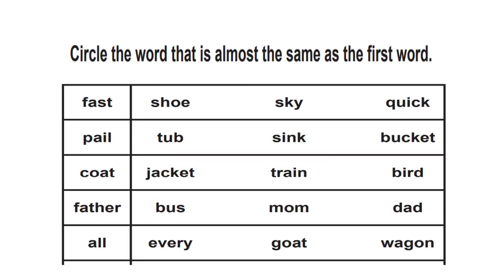Hello kids, welcome back once again! Today we will see synonyms. Now children, what are synonyms? Synonyms are words that have similar meanings — just like antonyms are opposites, synonyms are words that are almost the same. So we need to circle the word that is almost the same as the first word.